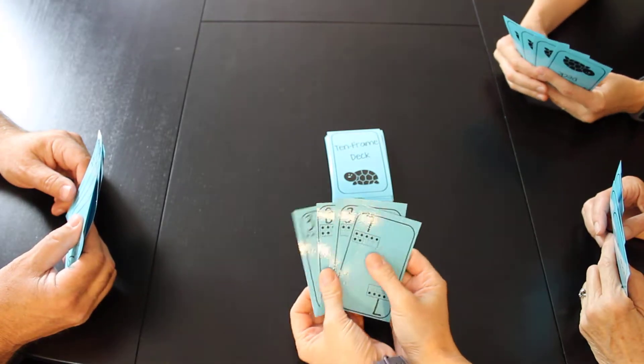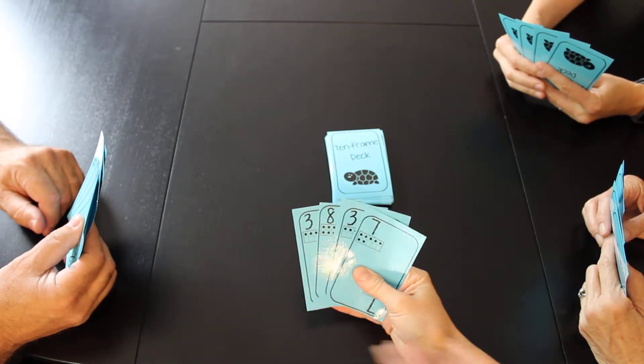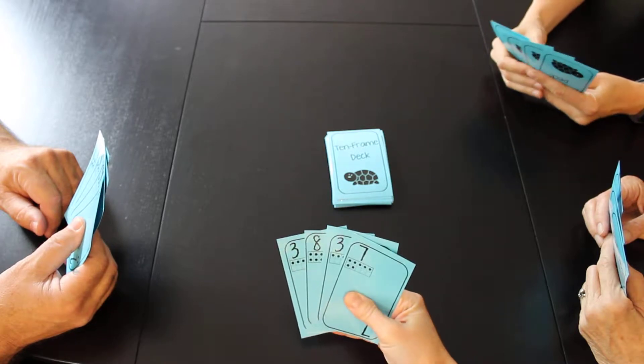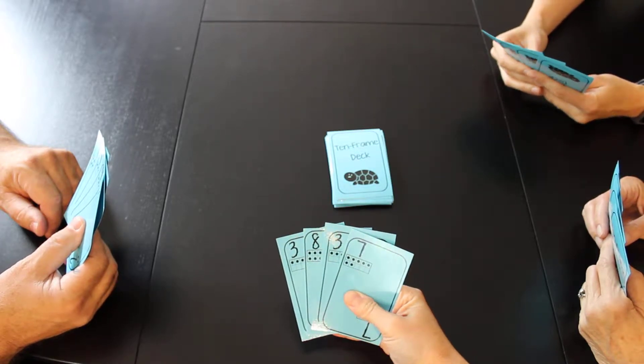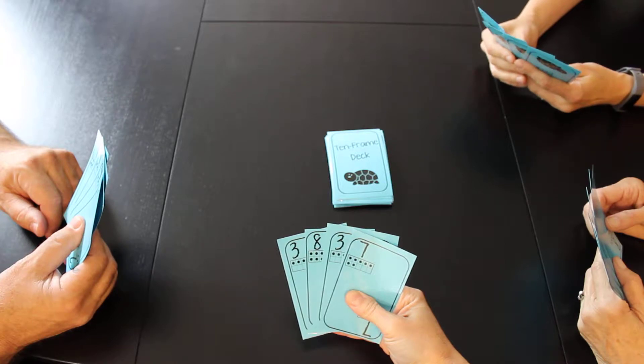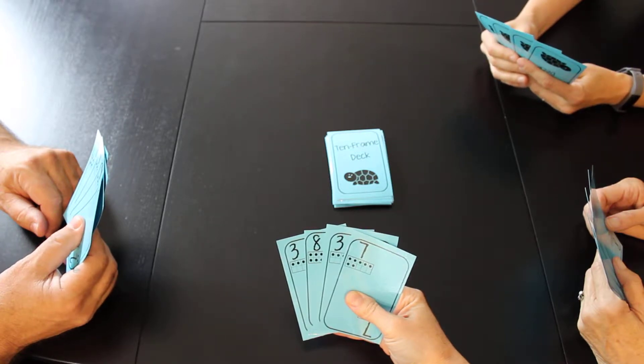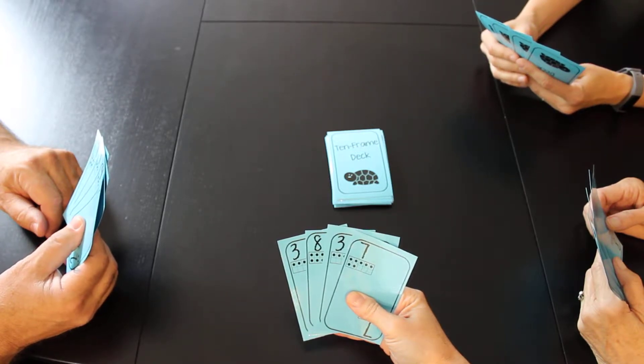So right now, I deal everyone four cards. But you can do five if you'd like. We're doing four cards and you're looking on your cards for any pairs that match to ten. So two numbers that are best friends and go together to make ten.